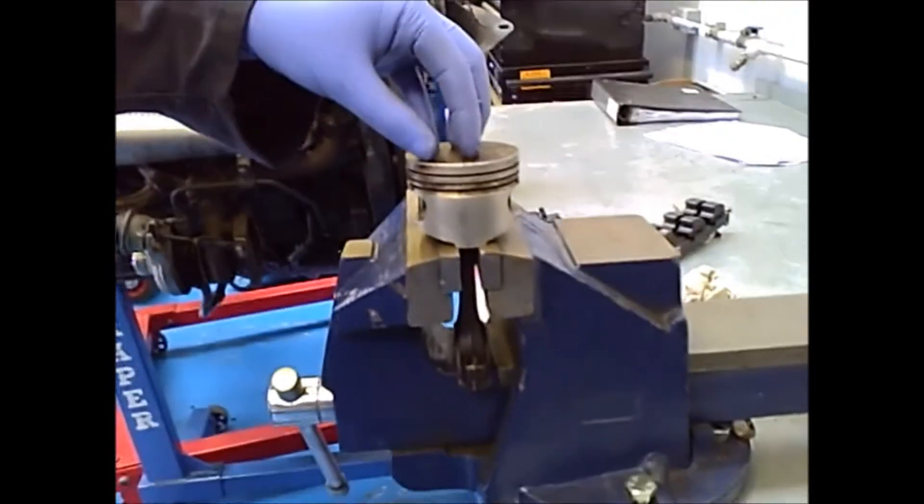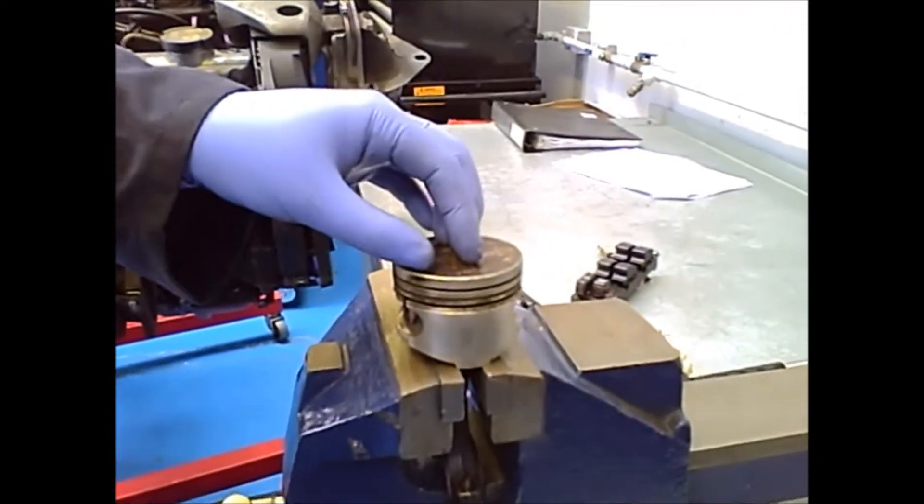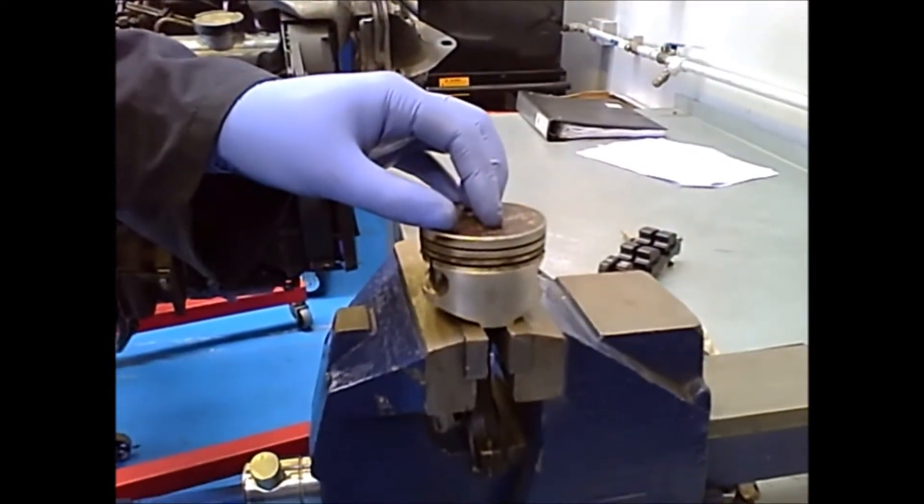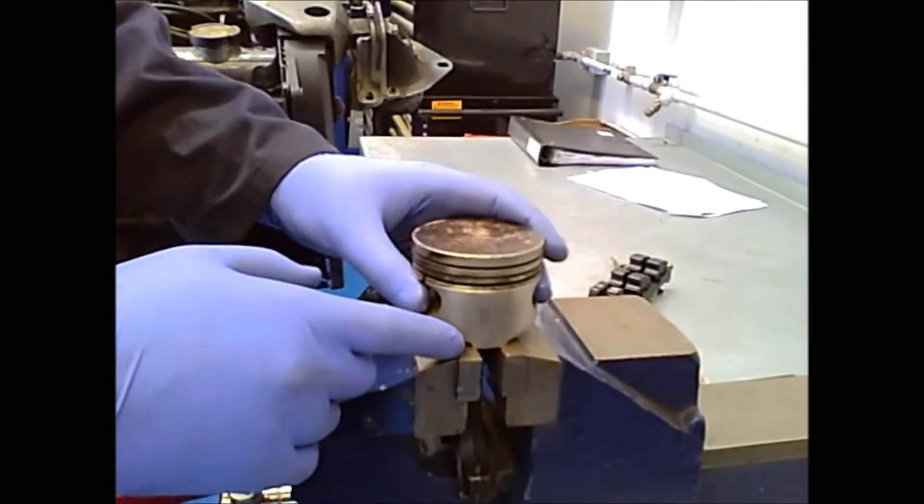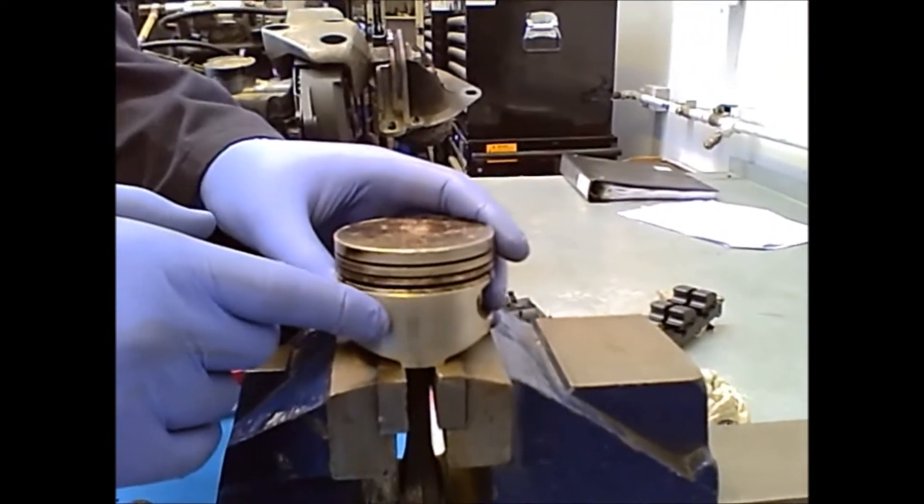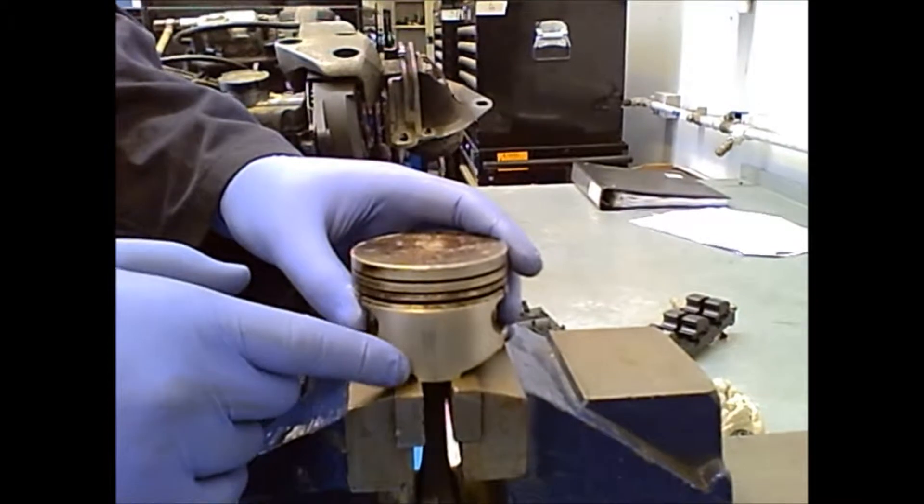The crown is smaller than the skirt because it is designed to expand as it will absorb heat during combustion. You will want to measure about 10-30mm up from the bottom depending on the size of the piston.